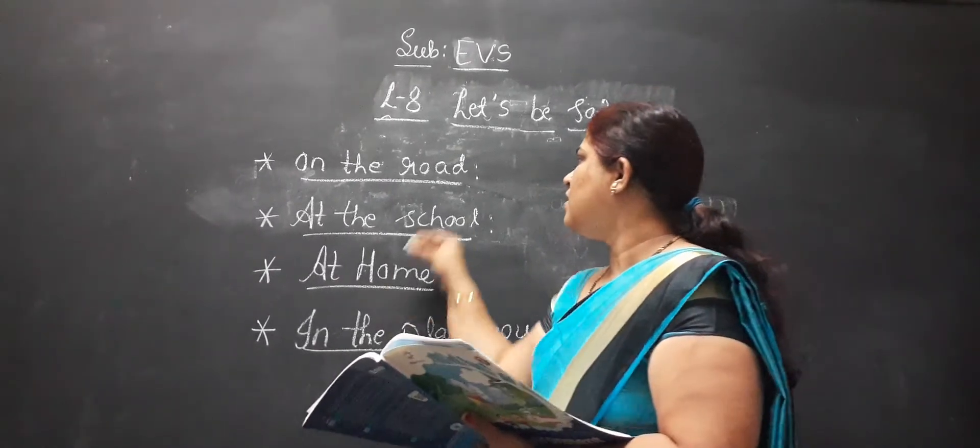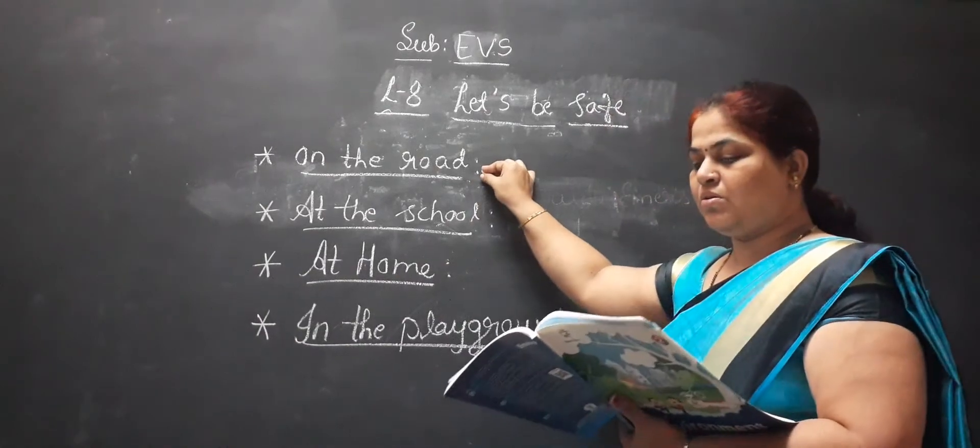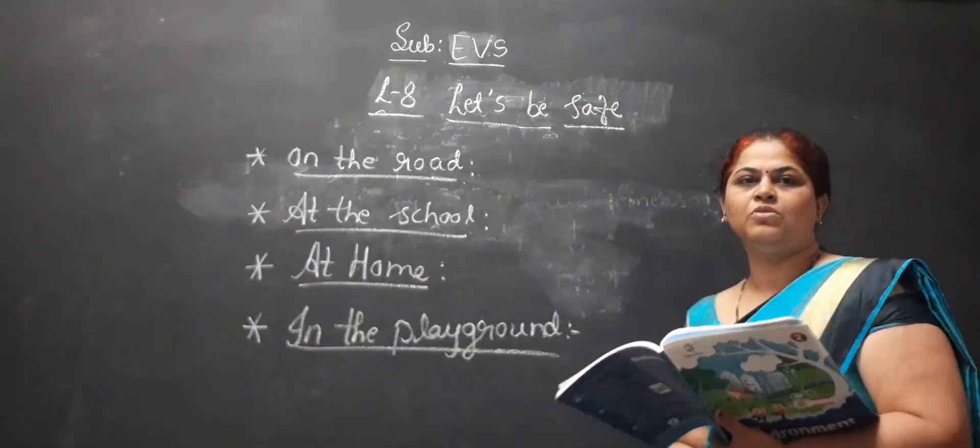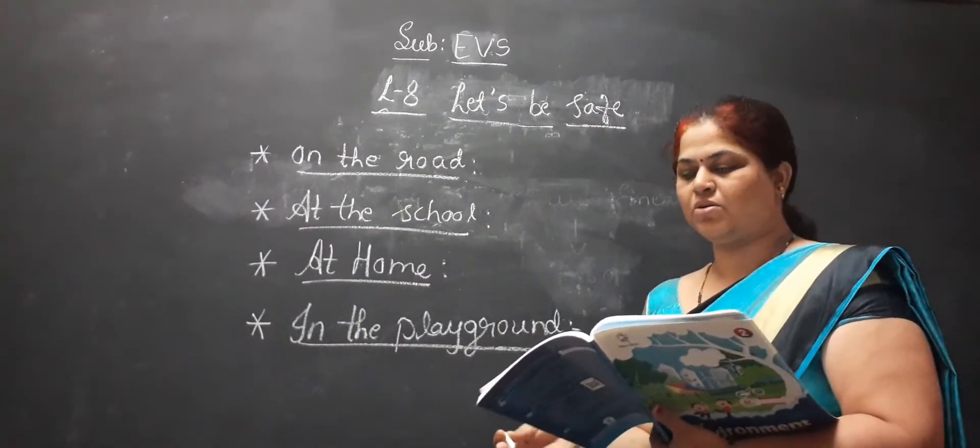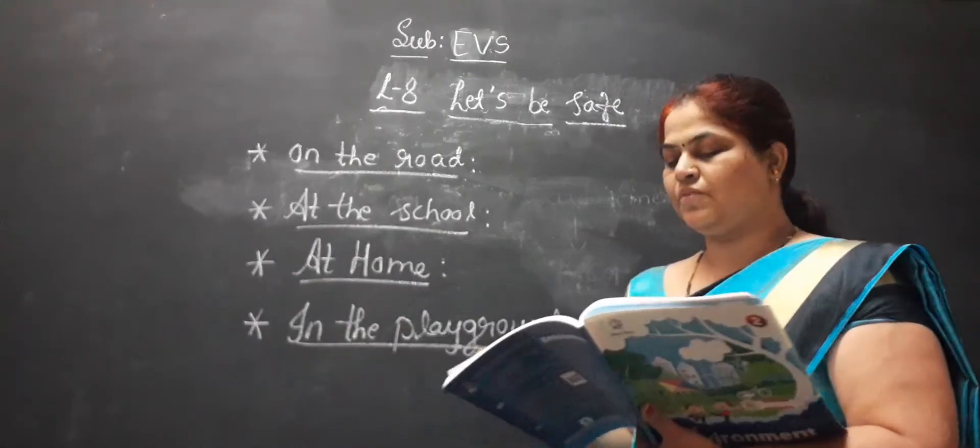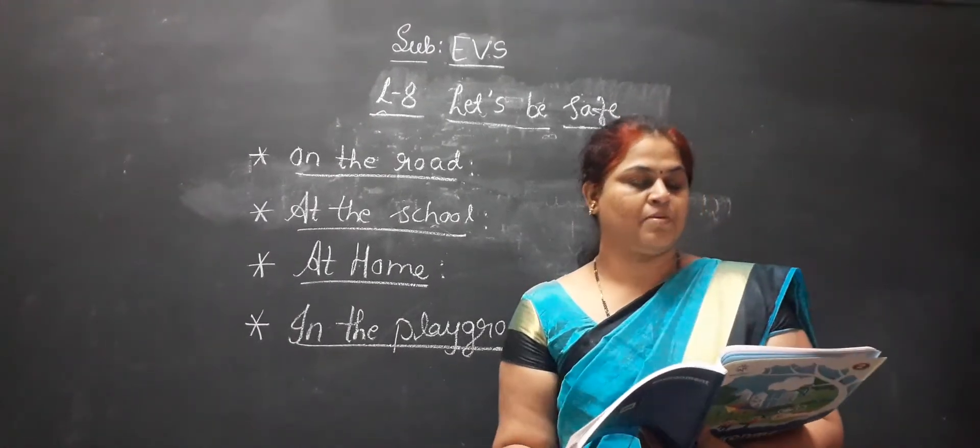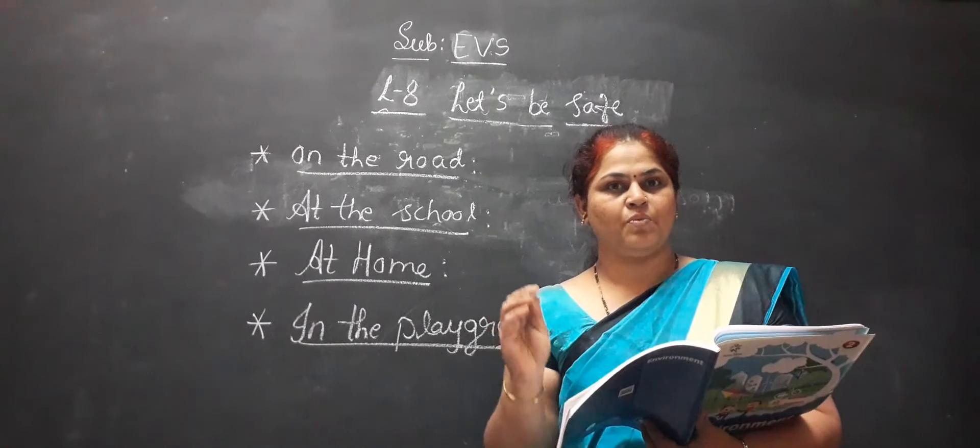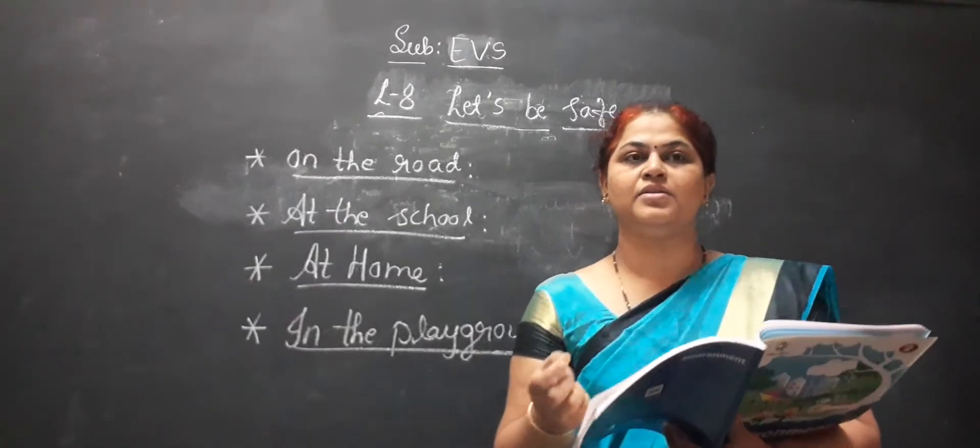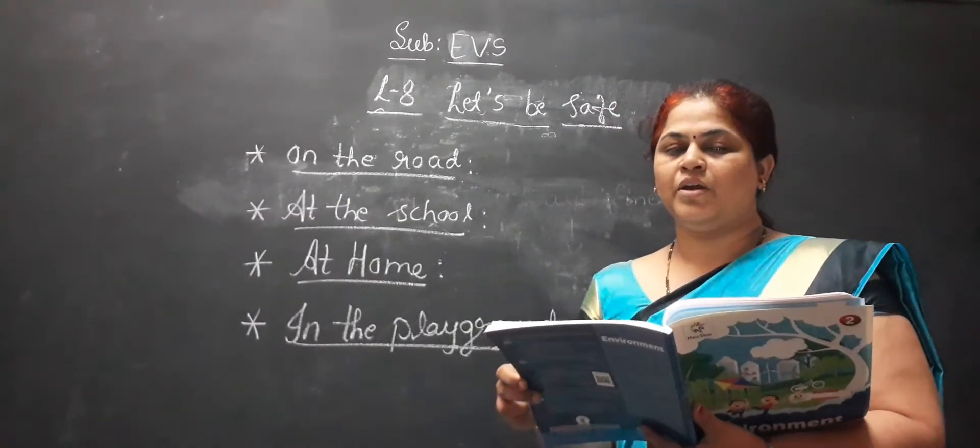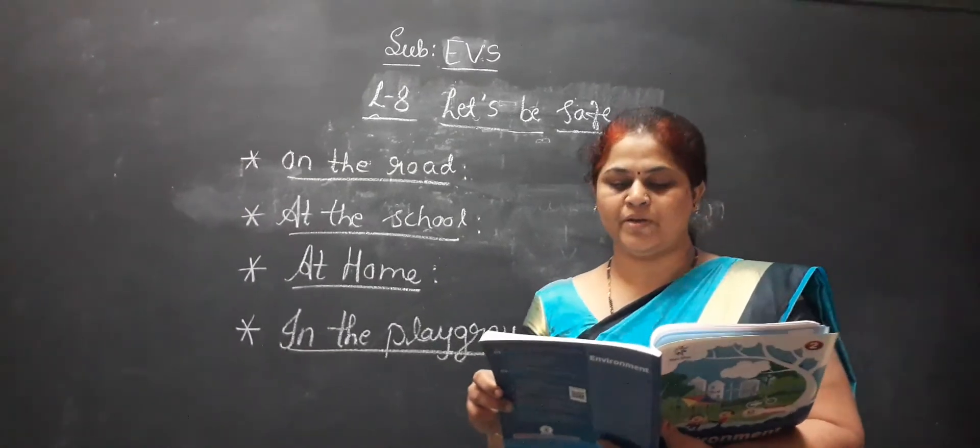Next is on the road. On the road, what you have to follow? You have to cross the road at zebra crossing and always walk on the footpath. Do not run or play on the road. We must wear our helmet and seat belts in a car. When you are going on the two wheeler, you have to wear the helmets.